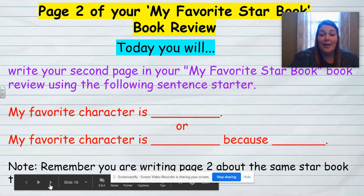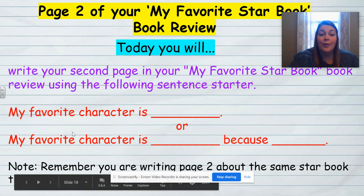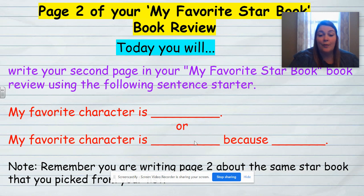When you are writing your second page today in your 'My Favorite Star Book' book review, you could choose one of the following sentence starters. You could say 'my favorite character is blank' and tell us the name of the character, or you could say 'my favorite character is blank because blank.' In the first spot you tell us the name of the character, and then after 'because' you share your reason why that character is your favorite. Remember, when writing page two it's about the same star book that you picked from your list the first day.